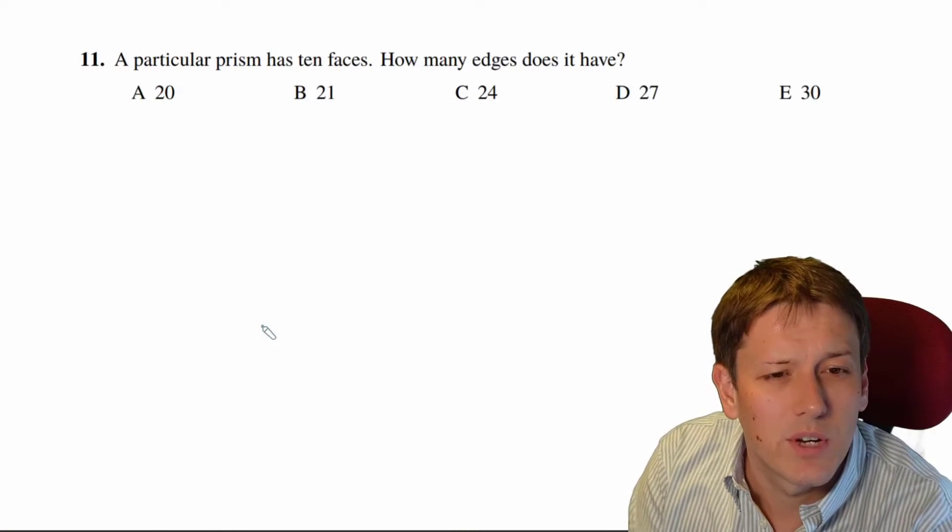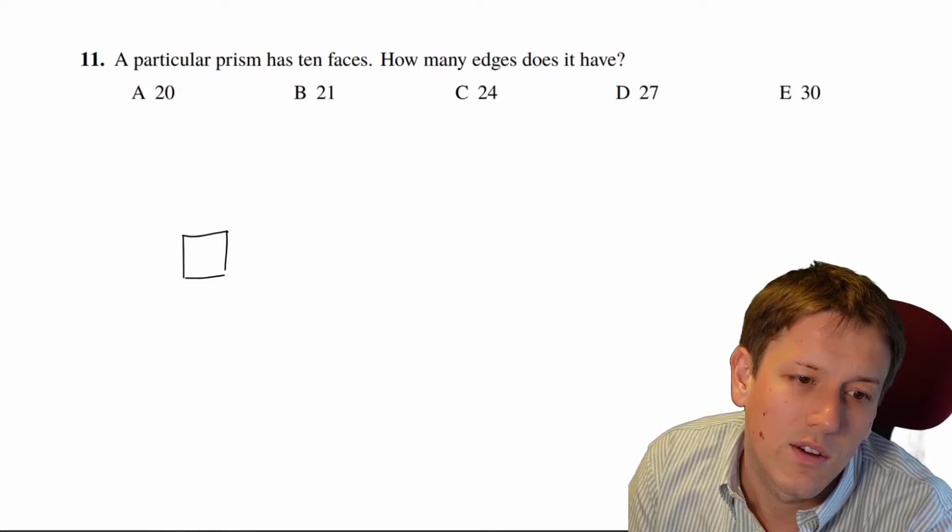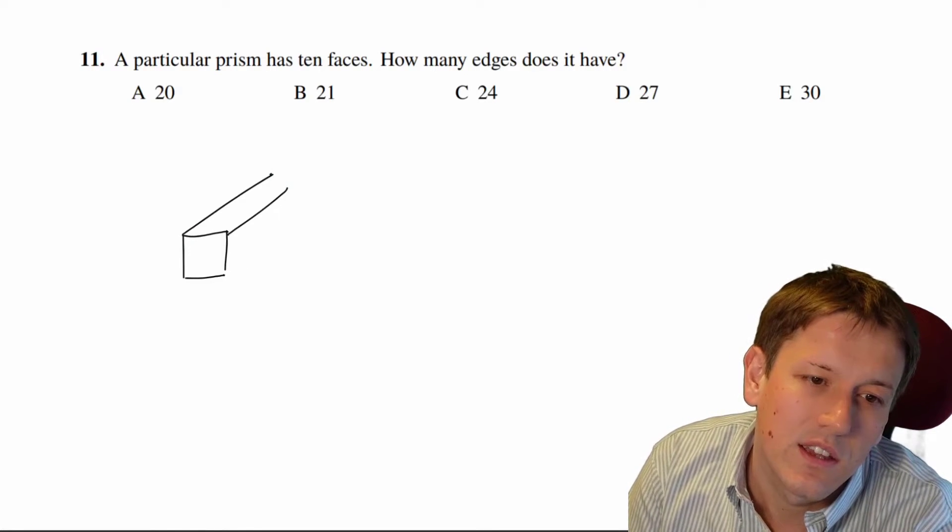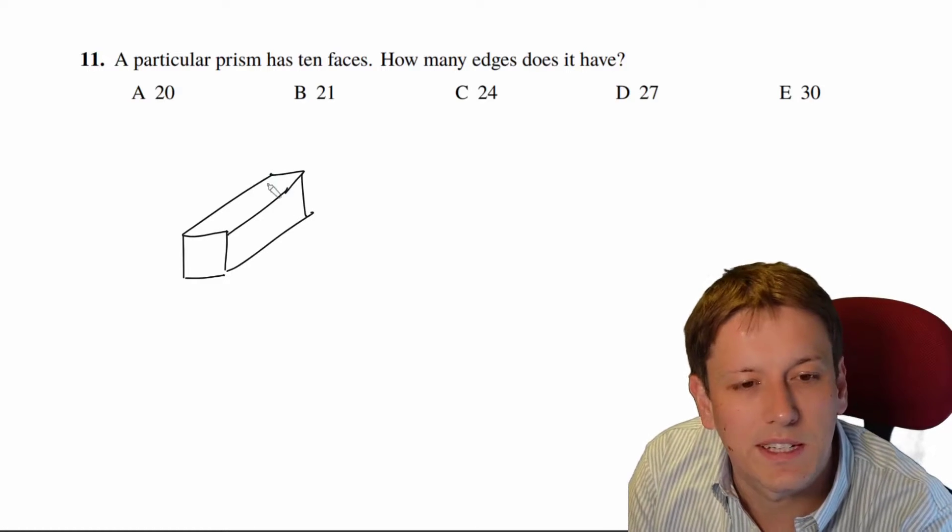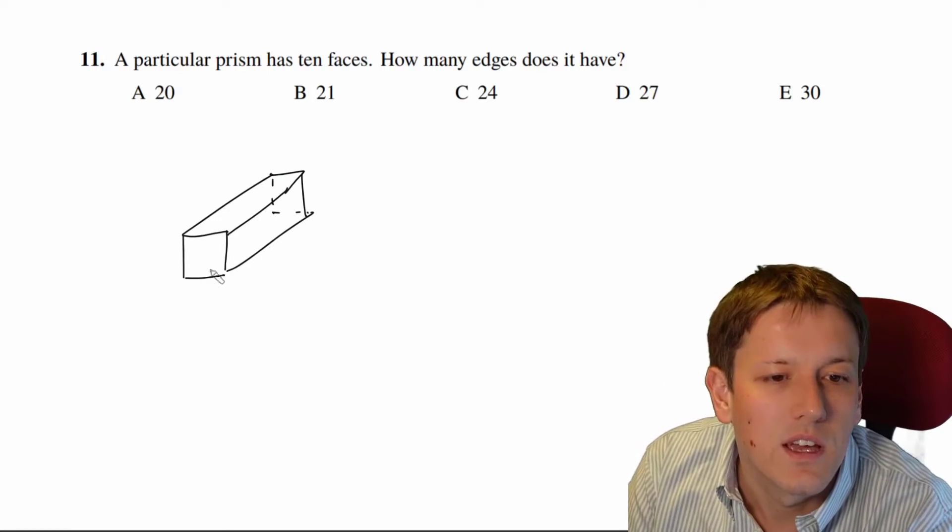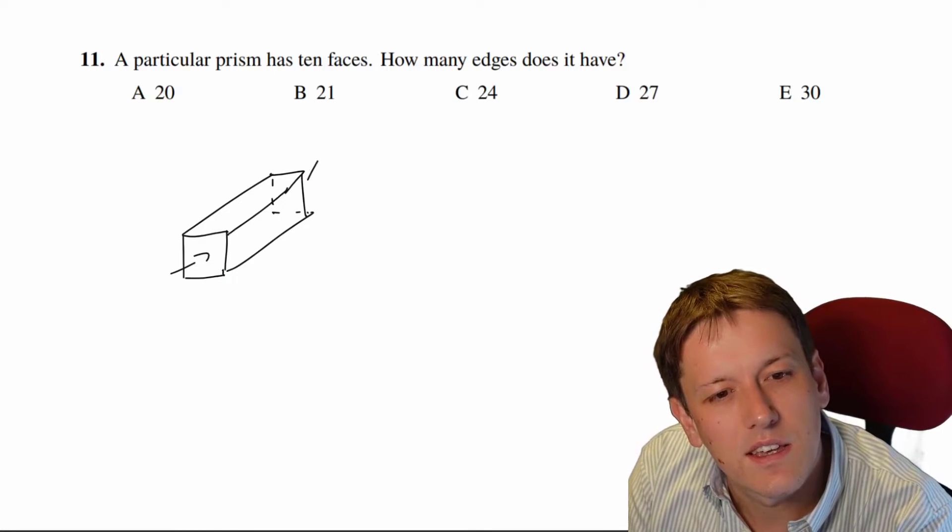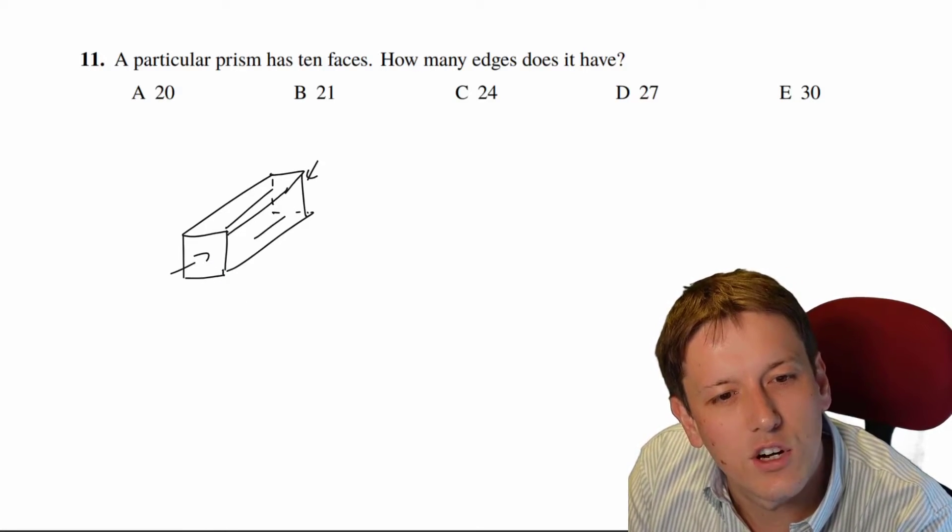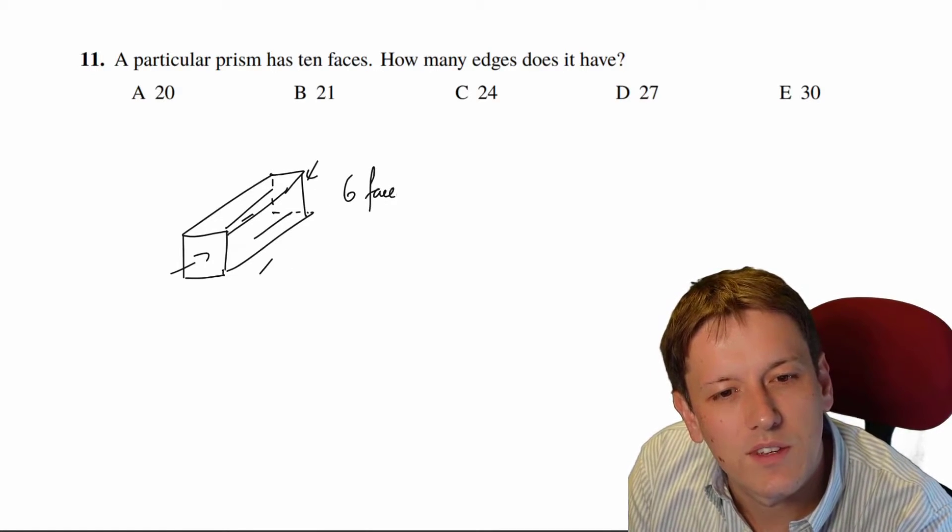So in the hint I talked a bit about what a prism is. I've got to take a shape on one end here and extend it in three dimensions and we get a shape something like this. So look at the hint if you're not sure what a prism is. In this one I've got my two ends that are faces and then I get another four faces like the top, the two sides and the bottom here. So this would give me six faces.